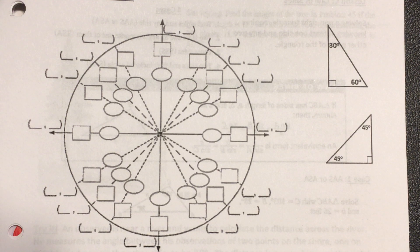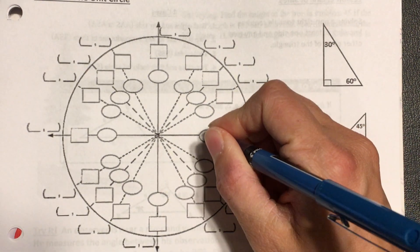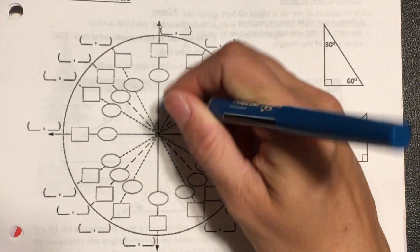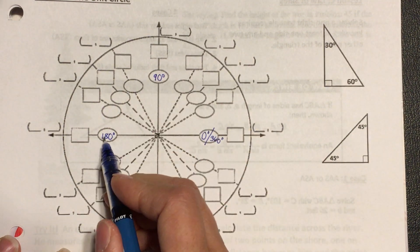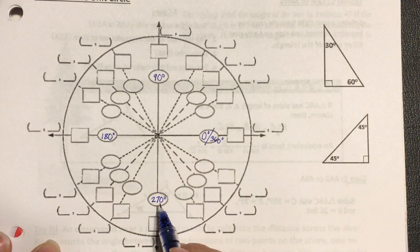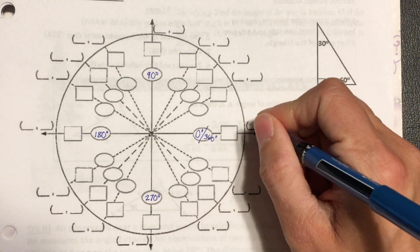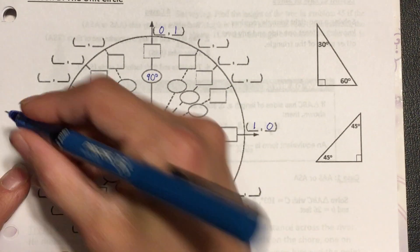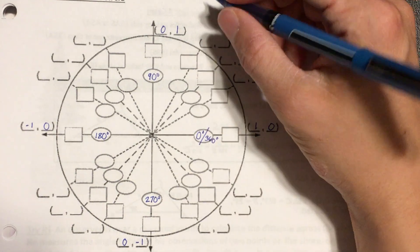I'm going to go through my steps again on how I fill out the unit circle. I always start with my degree measurements first — it doesn't matter if you use the box or the rectangle for degrees or radians. Starting with degrees: this is both 0 degrees and 360 degrees, this one is 90 degrees, adding 90 more is 180 degrees, adding 90 more is 270 degrees. The coordinates are (1, 0), (0, 1), (−1, 0), and (0, −1).